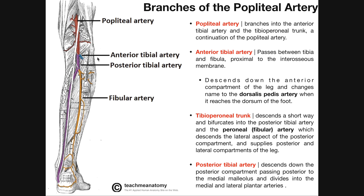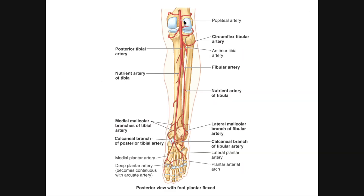As soon as it enters the posterior leg — meaning it crosses the inferior angle — it gives off the anterior tibial artery. Notice here where the red changes to purple, we see this blue artery come off. The anterior tibial artery appears short here, but most of it is visible on the anterior side of the leg because it passes through the interosseous membrane — a sheet of dense connective tissue connecting the tibia to the fibula — and emerges on the anterior side.